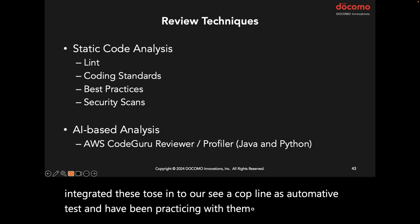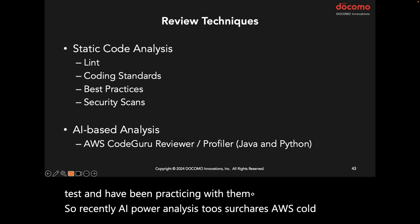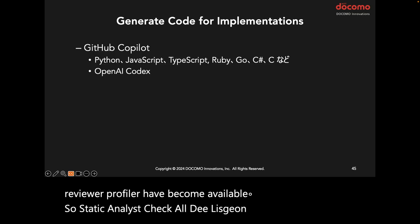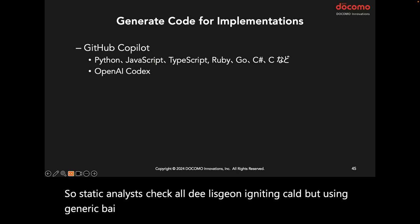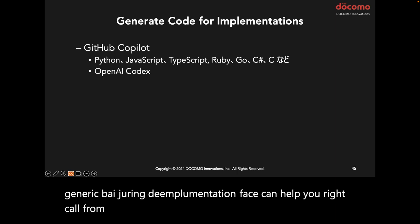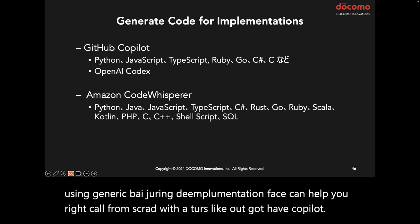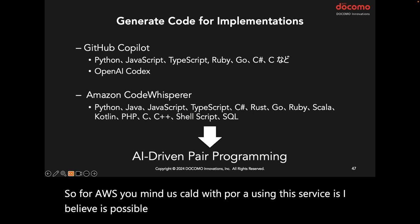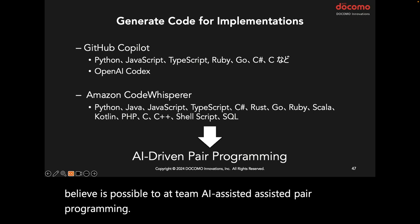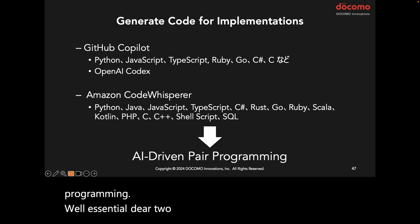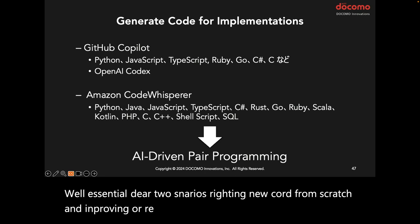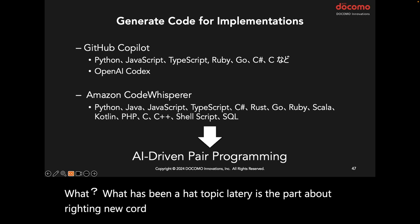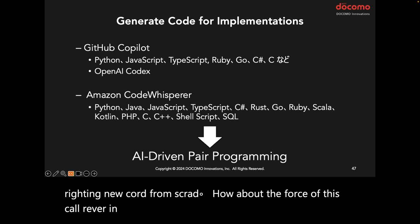Recently, AI-powered analysis tools such as AWS CodeGuru reviewer and profiler have become available. Static analysis checks already-written existing code, but using generative AI during the implementation phase can help you write code from scratch with tools like GitHub Copilot, or AWS CodeWhisperer. This enables AI-assisted pair programming. Essentially there are two scenarios: writing new code from scratch, and improving or rewriting existing code. The focus of this session will be on improving existing code — refactoring.